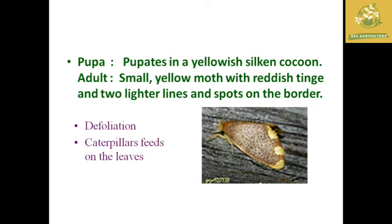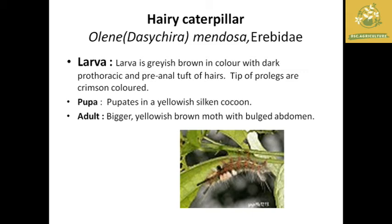This causes major defoliation. The next hairy caterpillar is Volina Mendoza, family Arctiidae. It is grayish-brown in color with a pre-anal tuft of hairs in the prothoracic region. It is crimson-colored and messy. The adult male is black with a brown motif and a bulged abdomen.